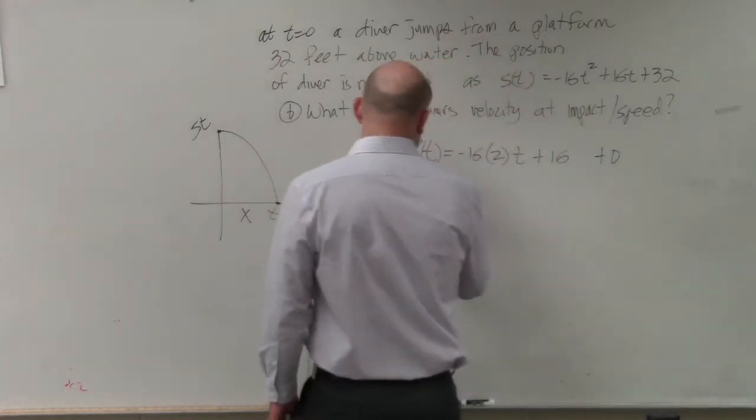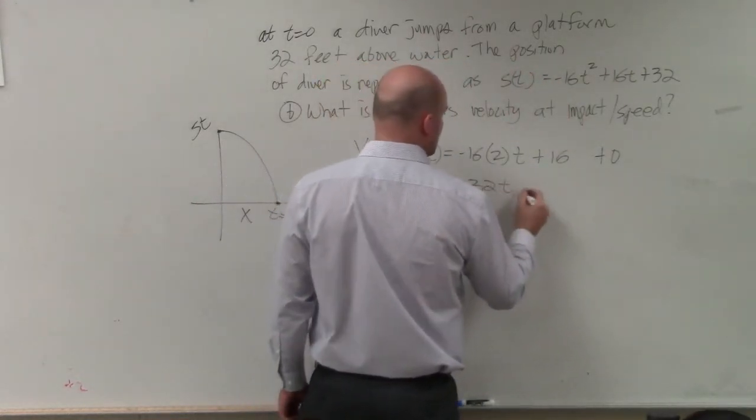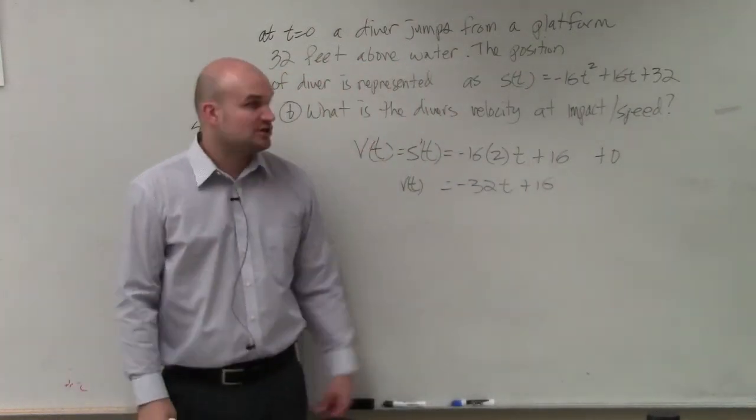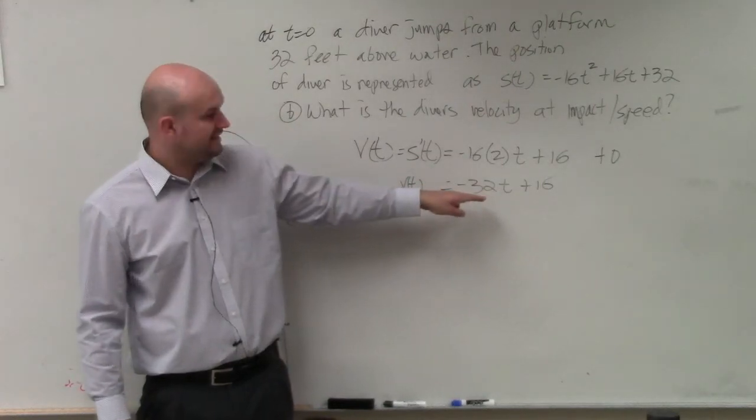So therefore, v of t equals negative 32t plus 16. So the function of the velocity of this diver is negative 32t plus 16.